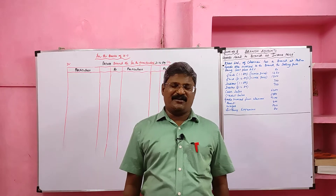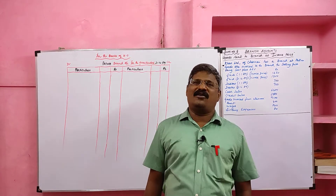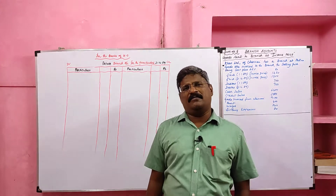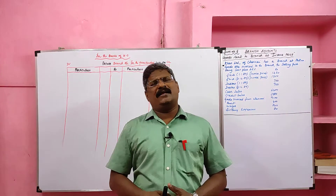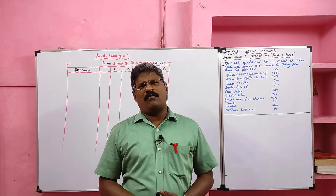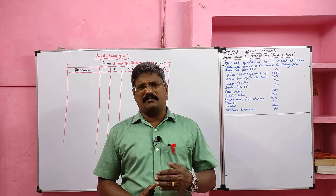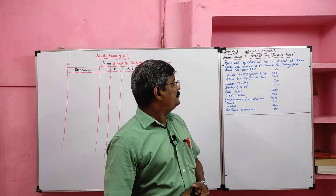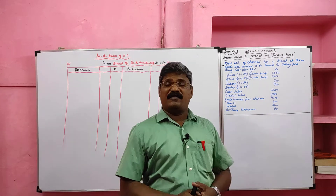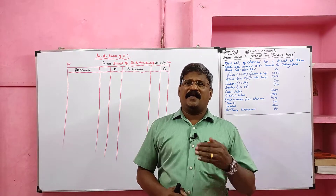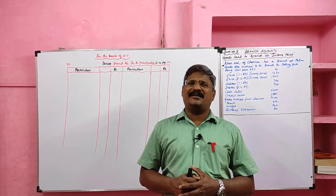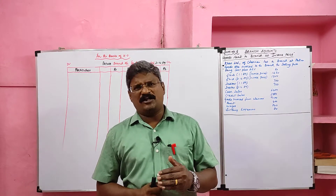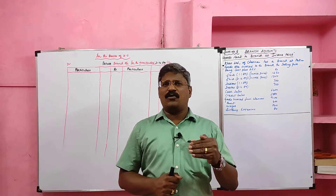Students, we are learning branch accounts. We already solved four problems in relation to the debtor system where goods are invoiced to the branch at cost price. But today we are going to learn sum number five, where the head office sends goods to the branch at invoice price. Invoice price is more than the cost price.